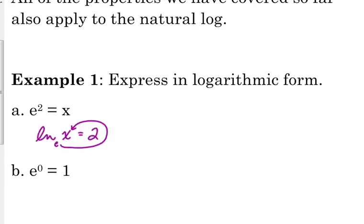E to the 0 is equal to 1. Remember, I mentioned that property yesterday. Anything to the 0 power is equal to 1. So in log form, that's the natural log of 1 is equal to 0. Remember, I told you yesterday, any log of 1 is automatically equal to 0. That applies to the natural log as well.